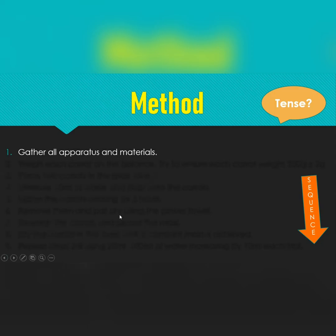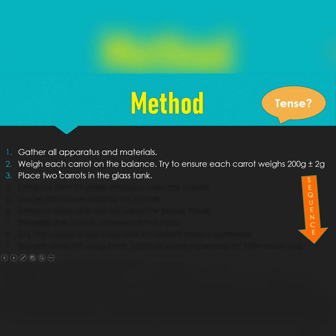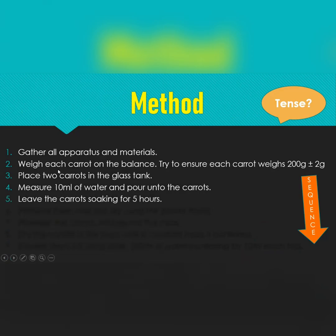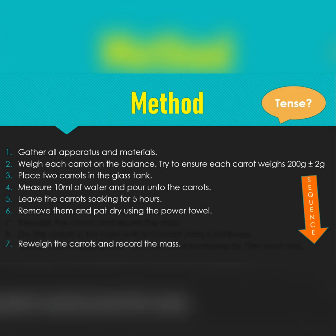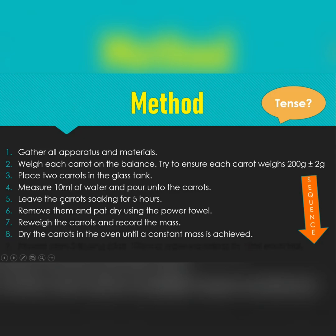Gather all your apparatus and materials. Weigh each carrot on the balance and try to ensure each carrot weighs 200 grams — it will be difficult to get them the exact same weight, hence the tolerance arrow. Place two carrots in the glass tank; we use two to get a nice average. Measure 10 ml of water and pour it onto the carrots. Leave the carrots soaking for five hours, remove them and pat dry using paper towel. Reweigh the carrots, record the mass, then dry the carrots in the oven until a constant mass is achieved.